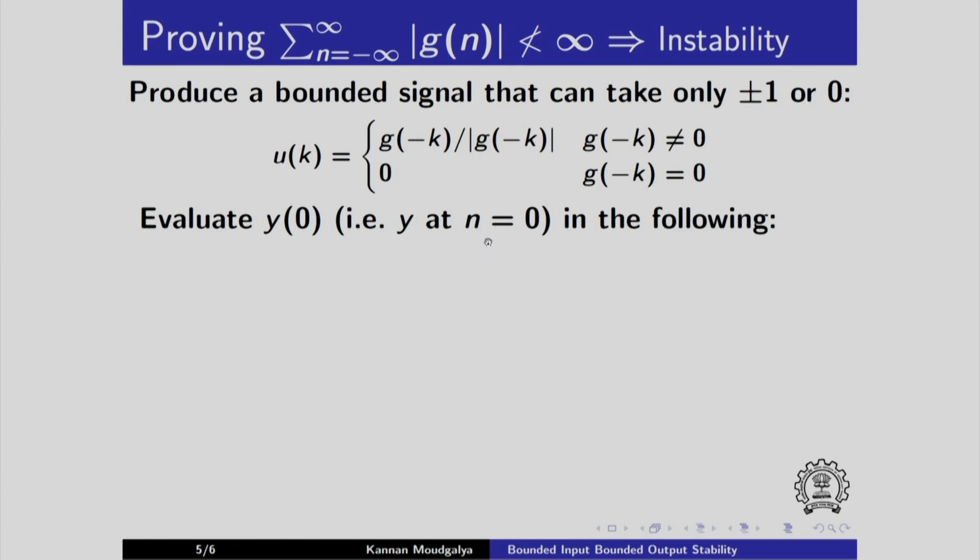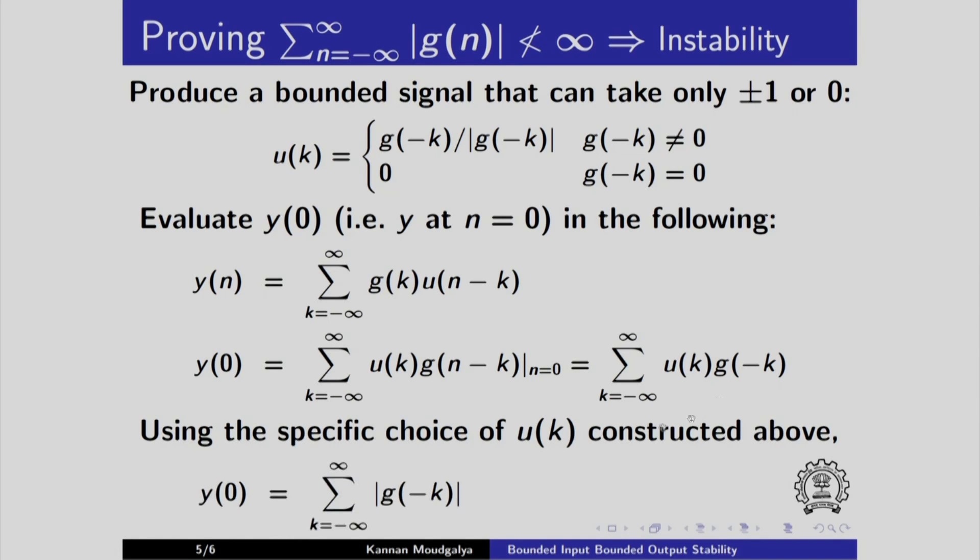Now, evaluate y(0) in the convolution expression. This is the convolution expression. Let us evaluate y(0). So, y(0) is... I have interchanged this using the commutativity property. So, I get this u(k) into g(n-k) and we substitute n equals 0. So, it becomes g(-k). Now, because u(k) is the signum function, we get the expression for y(0) as the absolute value here and hence absolute sum. But we know that this is unbounded. We are given that it is unbounded. As a result, y(0) is also unbounded.